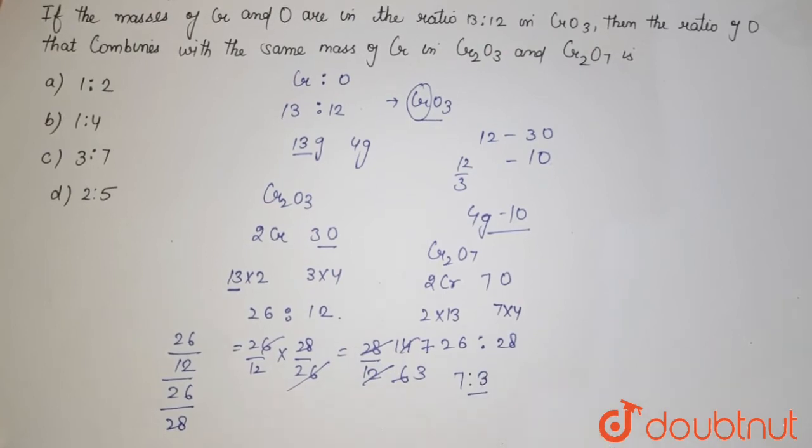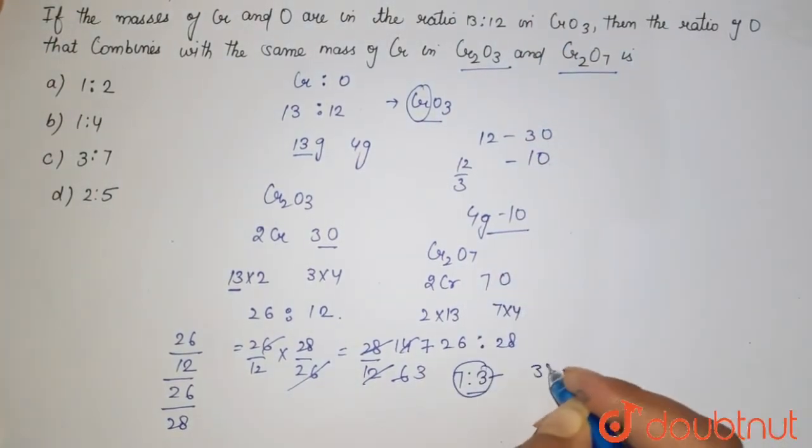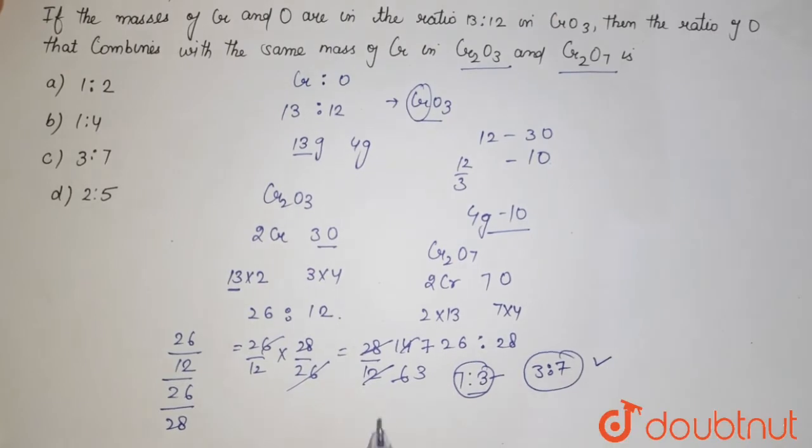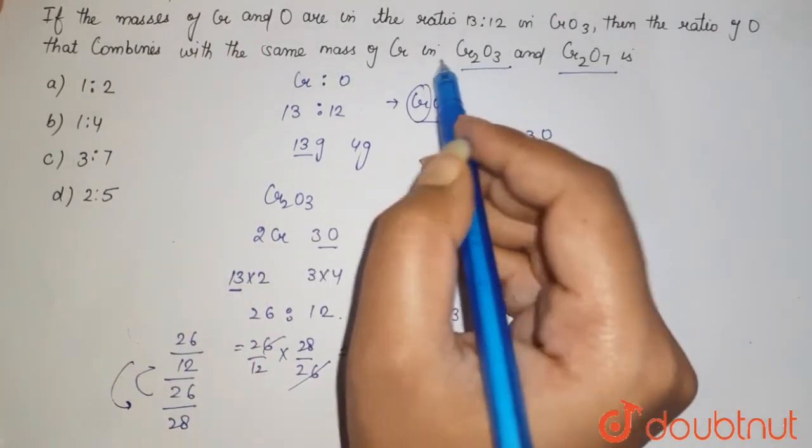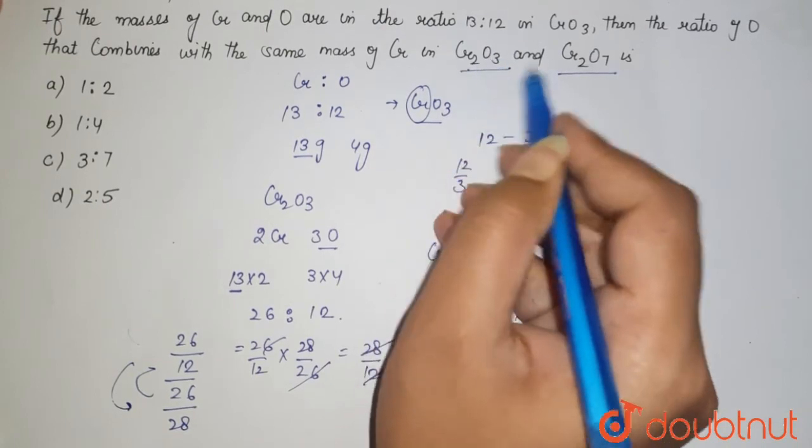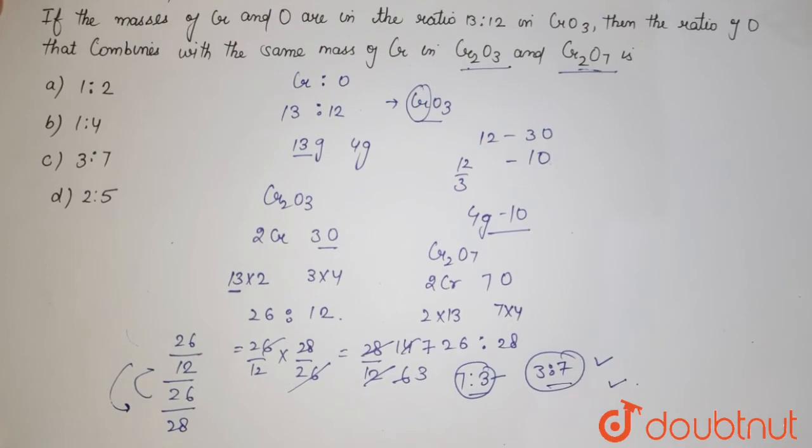is to 7. Why? Because you have to just reverse it. Why? Because we have to calculate the ratio of the mass of Cr2O3 and Cr2O7, so it is here 3:7. So